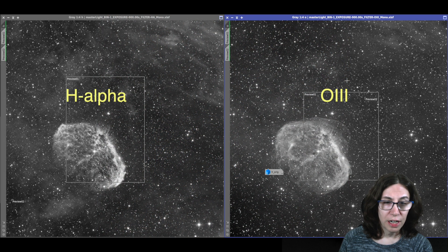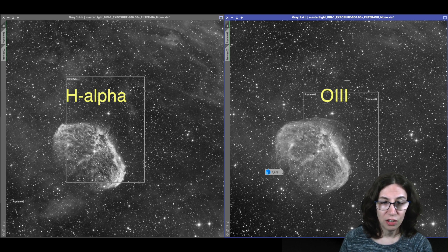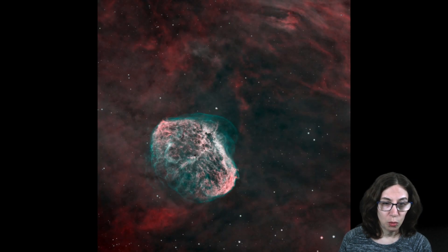Here are the hydrogen alpha and O3 masters. You can see the H alpha shows a lot of texture, and the O3 has more wispy edges. Combined, they make for an image with wonderful detail and color. This is actually one of my favorite images.